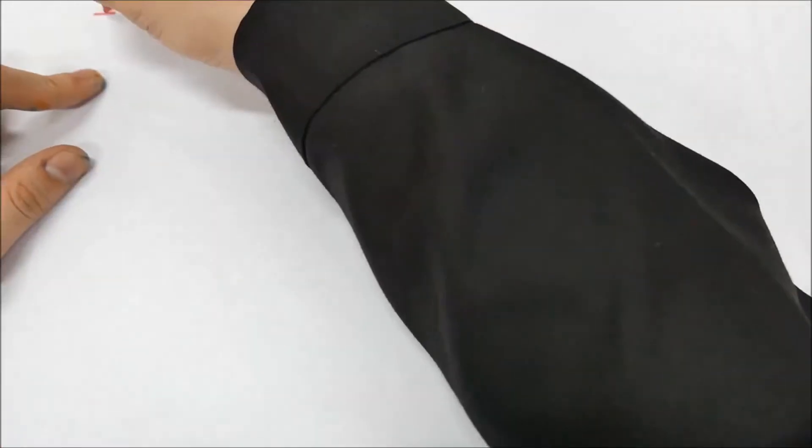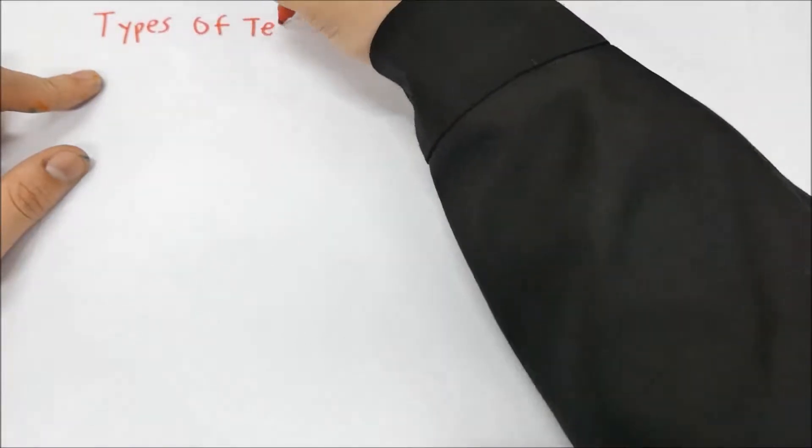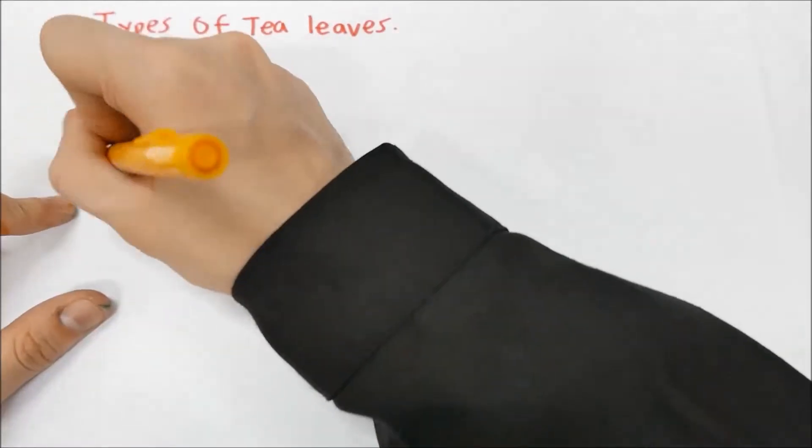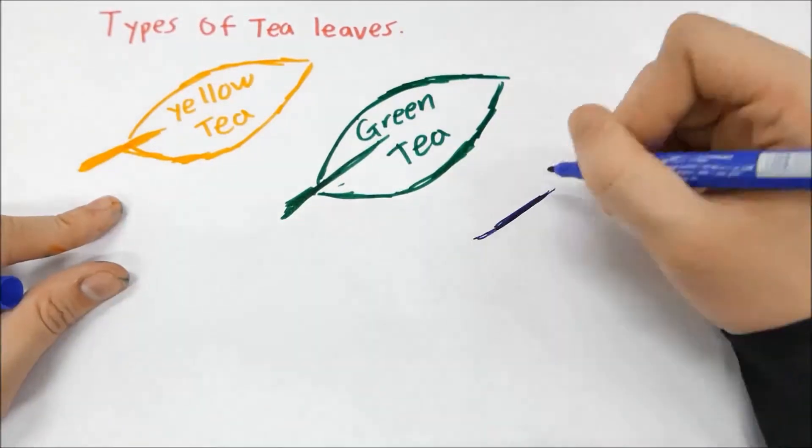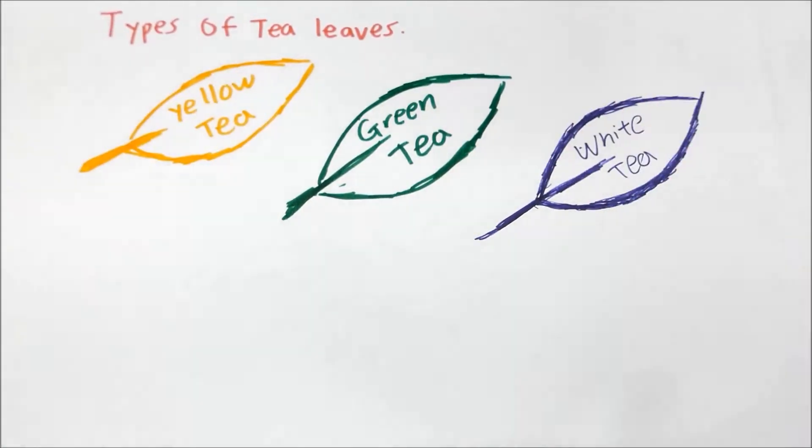First up, here is some background knowledge on the topic of tea itself. Tea can generally be categorized into six different groups: yellow, green, white, oolong, pua, and black tea.